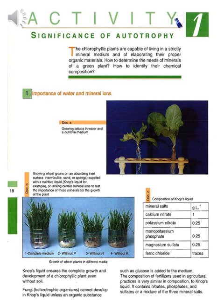According to the first activity, which talks about the significance of autotrophy: autotrophy is a mode of nutrition by which an organism produces its own food. As an introduction, chlorophyllic plants are capable of living in a strictly mineral medium and of elaborating their proper organic materials. How do we determine the mineral needs of green plants and identify their chemical composition?